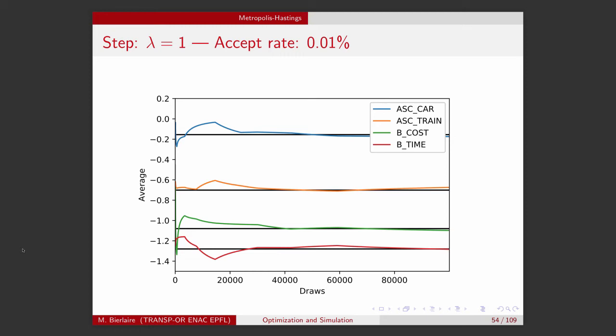Because we jump too far, a lot of draws are rejected. So we have a very low accept rate. And it takes longer for the chain to converge to the stationary distribution.